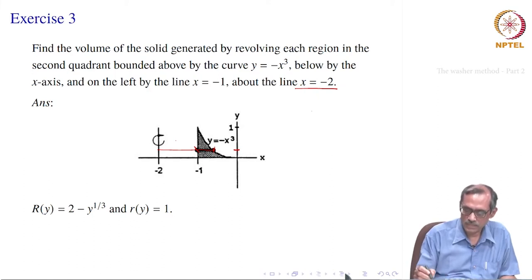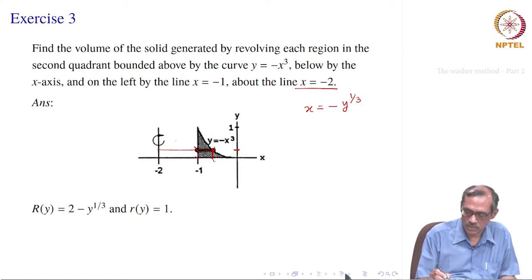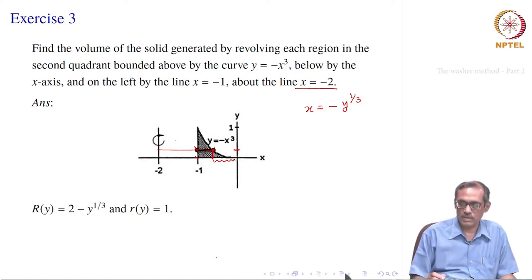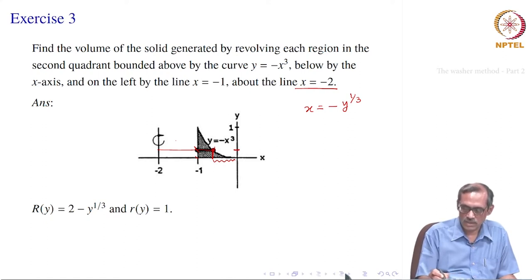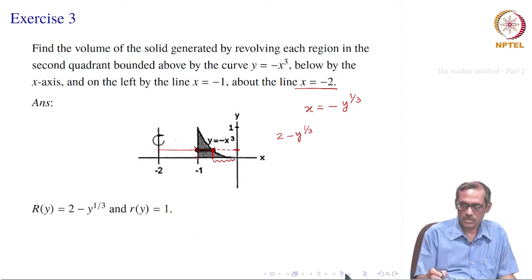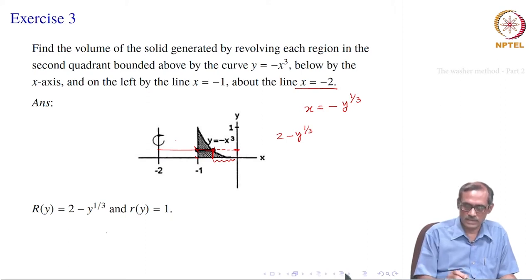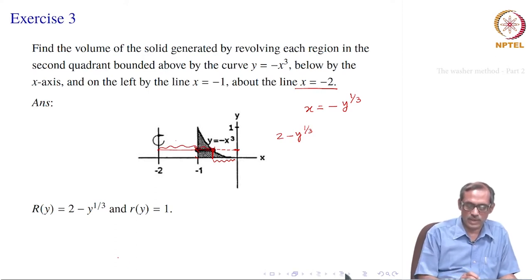The inner radius is the length from minus 2 to minus 1, which is 1. For the outer radius, the point on the curve y equal to minus x cubed gives x equal to minus y to the power 1/3. So the outer radius R(y) equals 2 minus y to the power 1/3, and the inner radius r(y) equals 1.